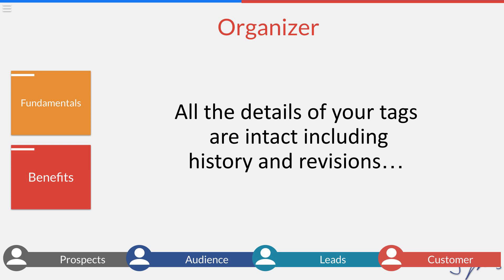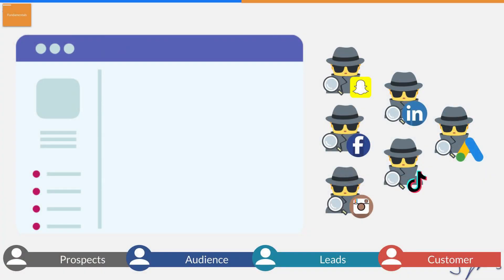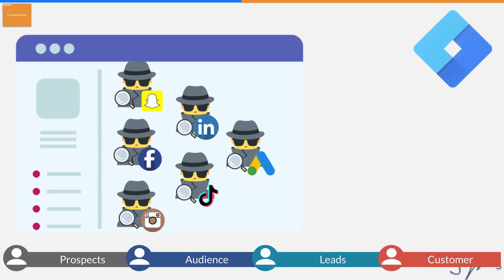Number two, it's going to allow you to see all of your tags and pixels in one place. And then number three, and most importantly, as you start to become more advanced with your marketing, you can create one trigger, and that one trigger will tell all the platforms what to do. Whereas if you don't have Tag Manager — say you have a landing page and a confirmation page and you want to know who's entered their name and email — you'd have to set that up for Google Ads, then Facebook, LinkedIn, Twitter, Snapchat, TikTok, and Pinterest. With Tag Manager, you set up one trigger and tell it what's important.